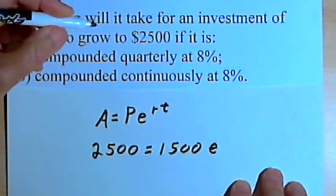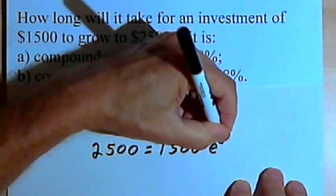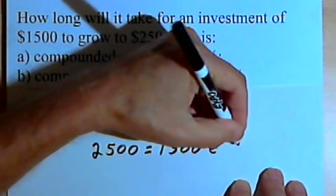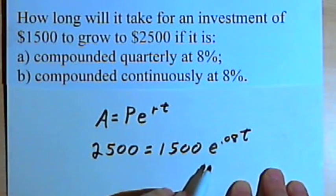And then we're multiplying that by e to the rate. We have the rate. That's 8% or 0.08 t. t is what we're looking for. So we just want to solve this problem now.